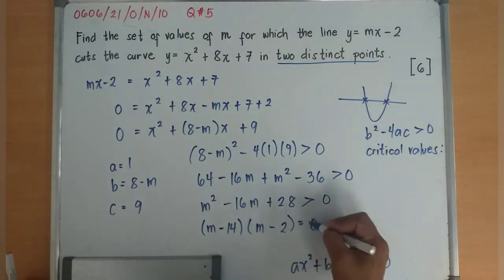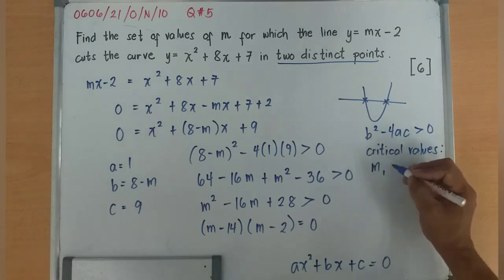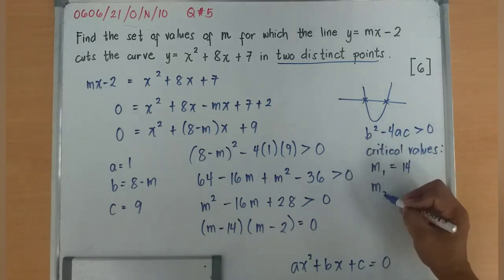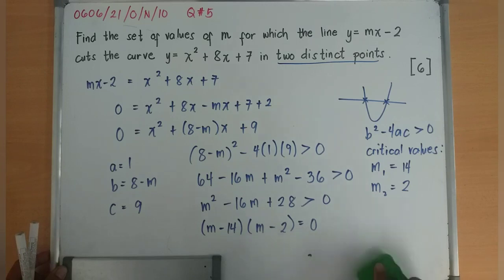For the critical values, I'll just basically need to equate it to 0. So I have first critical value is 14, and the second critical value is 2.